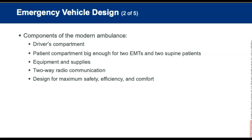Components of a modern ambulance include a driver's compartment and a patient's compartment big enough for two EMTs and at least one supine patient. Additional patients may be seated on the bench seat or swivel seat with appropriate safety restraints. It has equipment and supplies to provide emergency medical care at the scene and during transport, safeguard personnel and patients from hazardous conditions, and carry out light extrication procedures. It also has a two-way radio for communication, and is designed to ensure maximum safety, efficiency, and comfort.